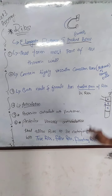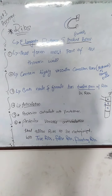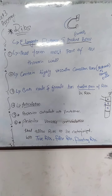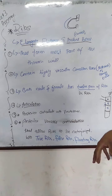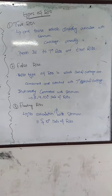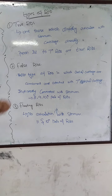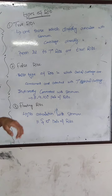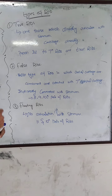Procedurally, ribs are articulated with the vertebral column, and anteriorly their articulation with the sternum allows ribs to be categorized into true ribs, false ribs, and floating ribs. The variable relation with the sternum — if the end is directly connected — we categorize it as true ribs, false ribs, and floating ribs.